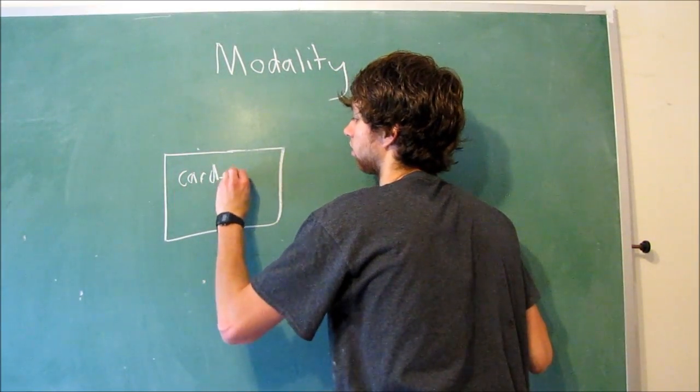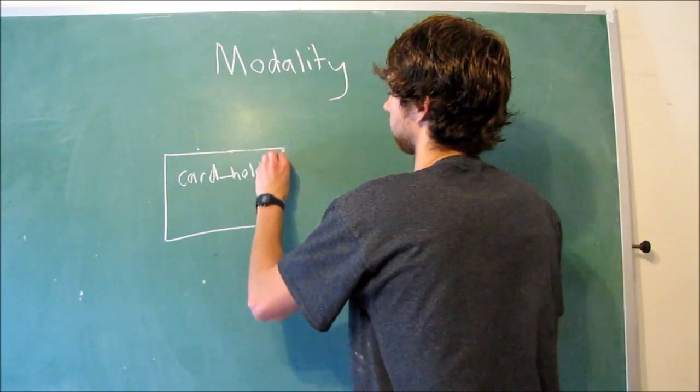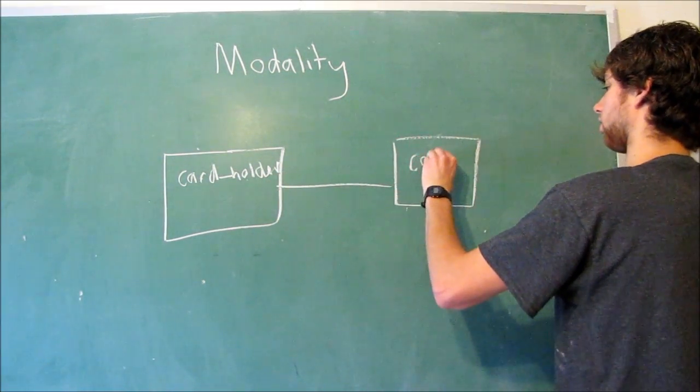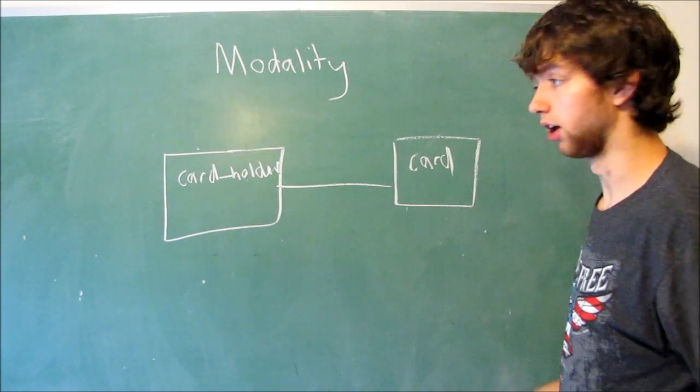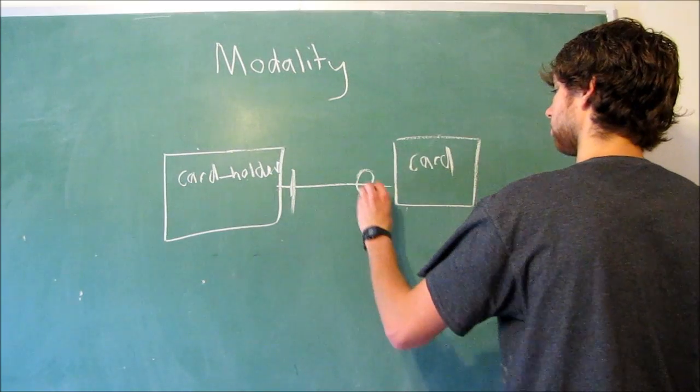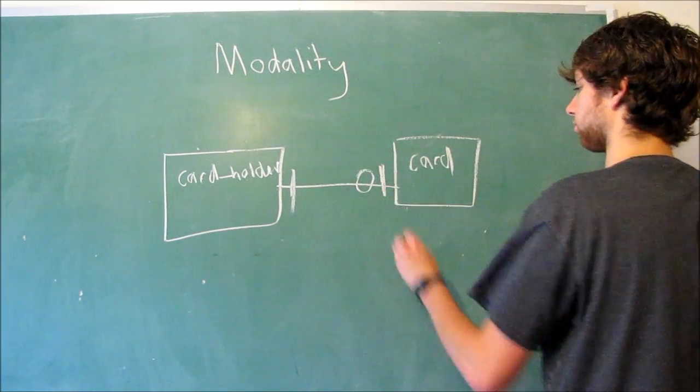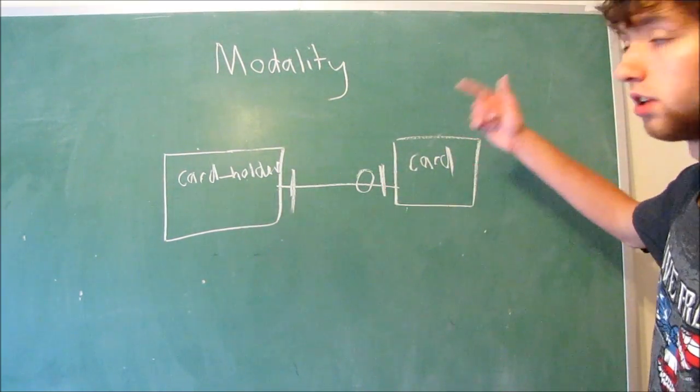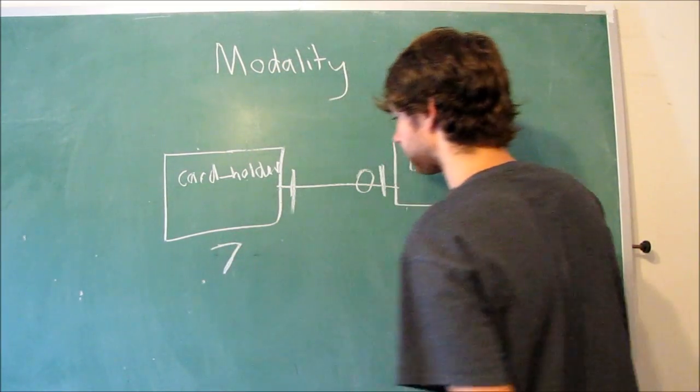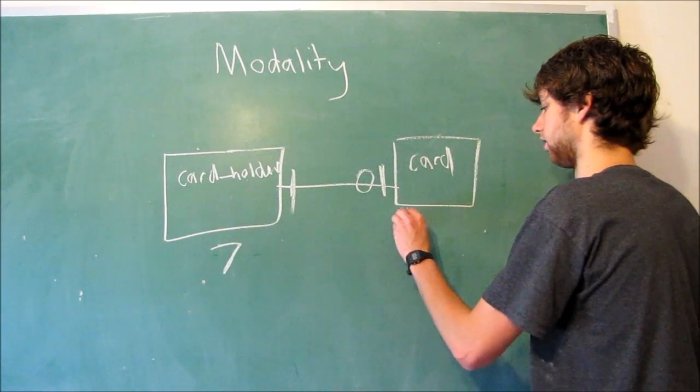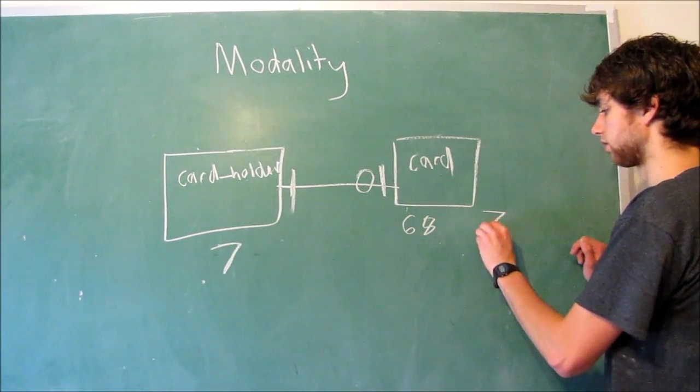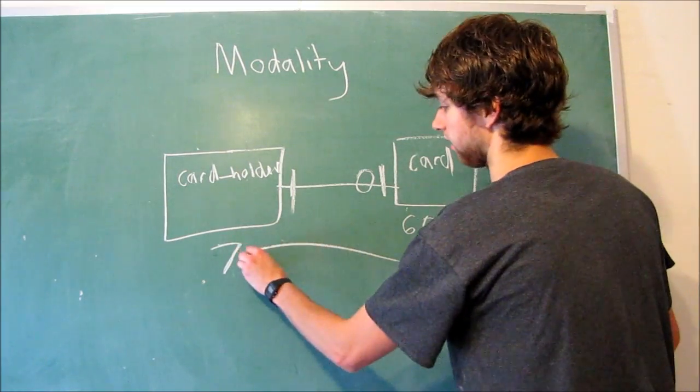Now we could say one card holder can have zero up to one relationships with one individual card. So we have a card holder with the ID of seven, and then we have a card with the ID of 68 owned by the card holder 7. So that points back, and that's acceptable.